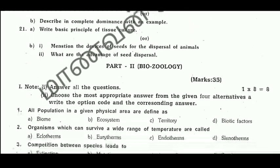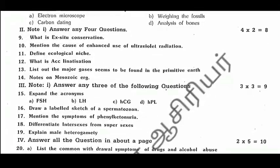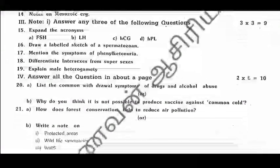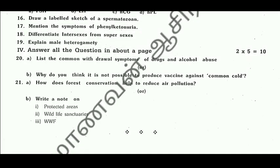This is a zoology question. You can find the link in the description. You will have to download and prepare. The diagram on the left can be spermatozoids. That is the name of abbreviation: FSH and LH. The list of common withdrawal symptoms in drugs and alcohol abuse. Why do you think it is not possible to produce a vaccine against the common cold? How does forest conservation help in reducing pollution? Protected areas, wildlife sanctuaries, WWF.